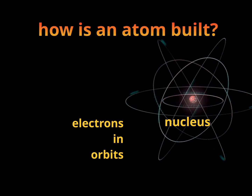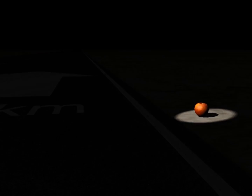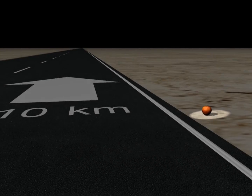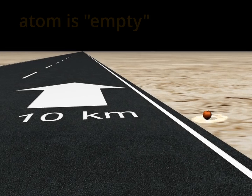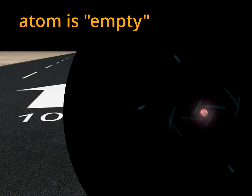However, this image you see is not true — the scale is not accurate. If we draw an atom so that the nucleus is as big as an apple, the electron should be drawn 10 km away. Between them there is a huge empty space.